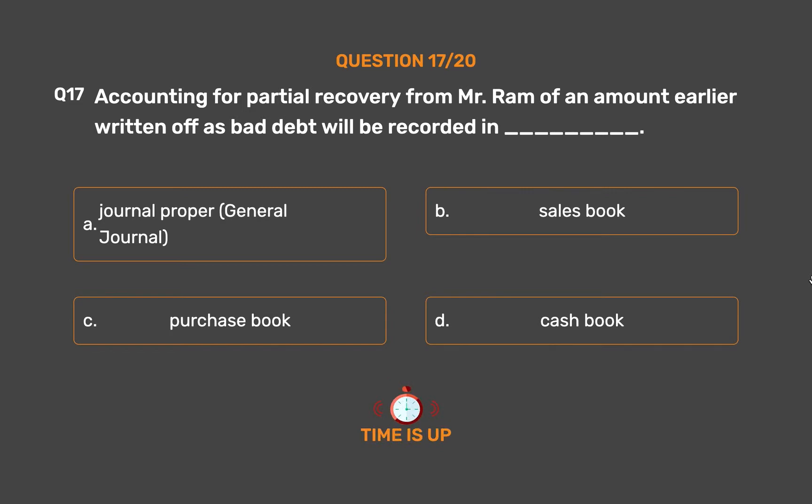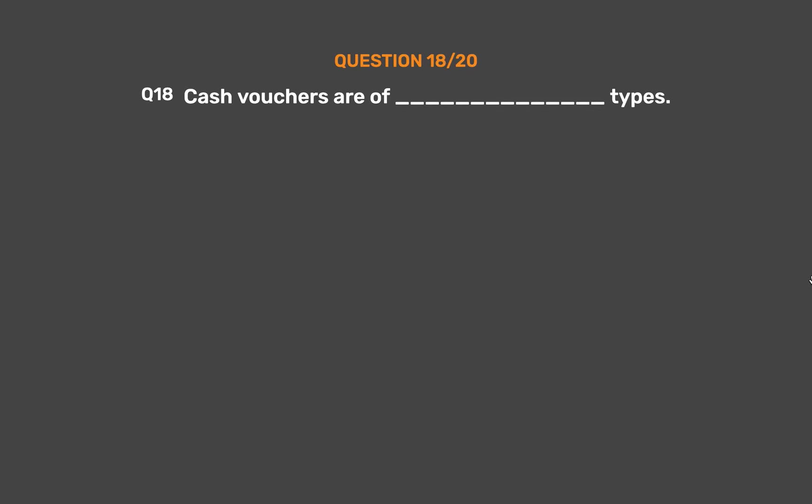The correct answer is option D: cash book.